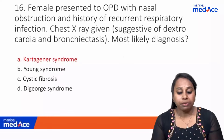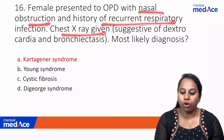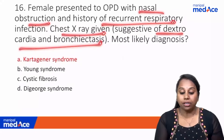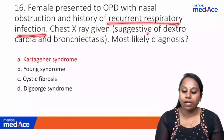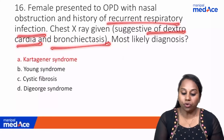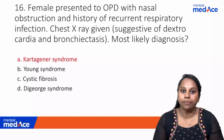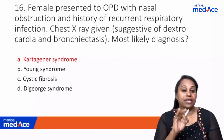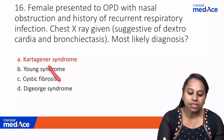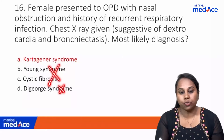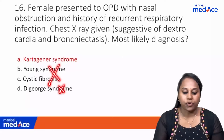Question 16: A female with nasal obstruction, recurrent respiratory infections, and X-ray showing dextrocardia and bronchiectasis. The diagnosis is Kartagener syndrome — a problem with dynein, the molecular motor for ciliary motility. Features include chronic sinusitis, bronchiectasis, situs inversus (dextrocardia), and infertility. Young syndrome and cystic fibrosis don't show dextrocardia. Answer: option A, Kartagener syndrome.